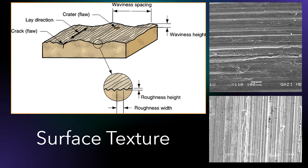Lay is a predominant direction or pattern of the surface texture. Flaws are irregularities that occur occasionally on the surface, including cracks, scratches, inclusions, and similar defects.